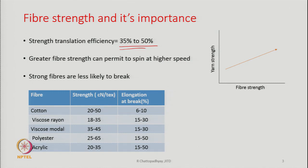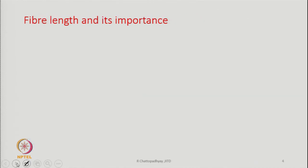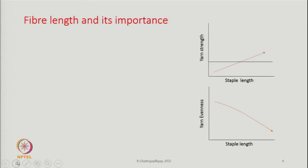Typical fiber strength values for fibers used in rotor spinning: cotton is 20 to 50 cN/tex, modal 18 to 35, viscose 35 to 45, polyester 25 to 65, acrylic 20 to 45. These data are available in standard textbooks. The strength and elongation values for fibers commonly used in rotor spinning are quoted, and the next topic is the importance of fiber length.